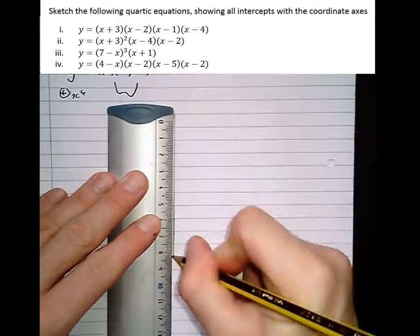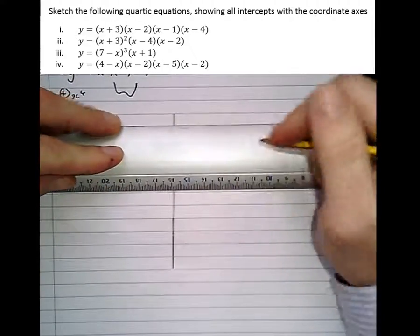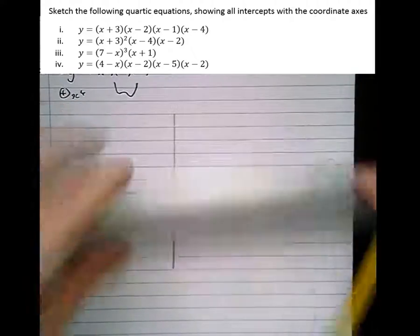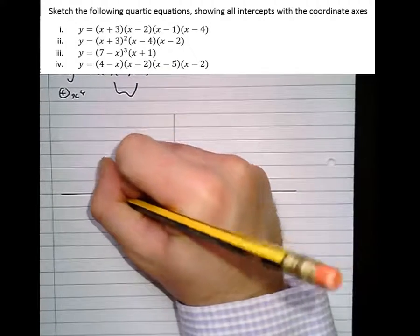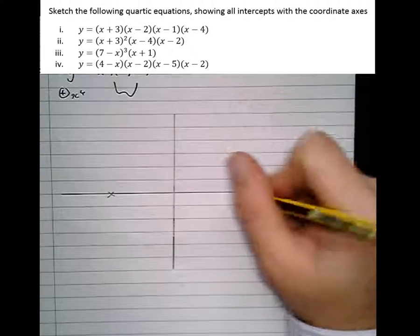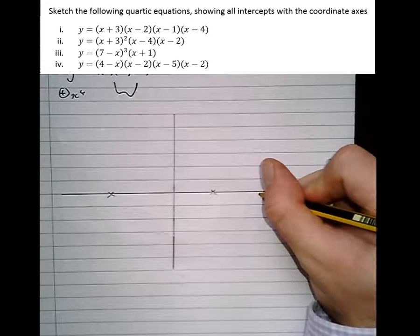So draw on the axes. Again, pencil so we can rub it out if there's anything wrong with it. And we can see that the roots are at minus 3 and minus 3 again, double root at minus 3. Then there's a root at 2, and then one at 4.